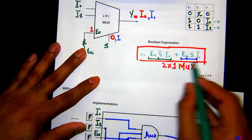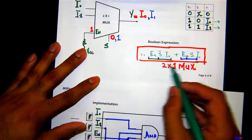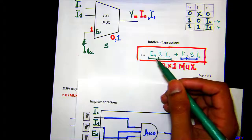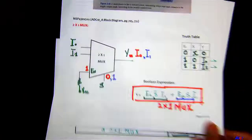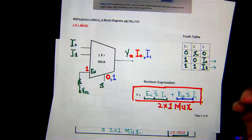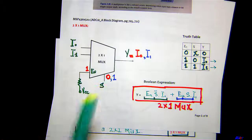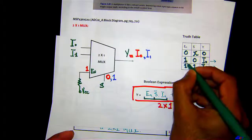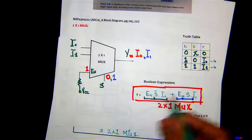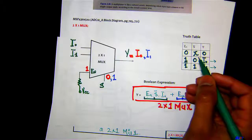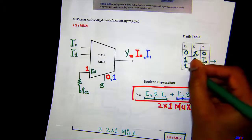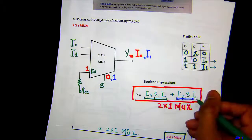When looking at the truth table, we look at minterm conditions. Enable is 1, so we write EN. S is 0, so we write S̄, then I0 — giving EN · S̄ · I0. Moving to the next minterm: EN is 1, S is 1, giving EN · S · I1. That is how we derived the Boolean expression for the 2x1 multiplexer.